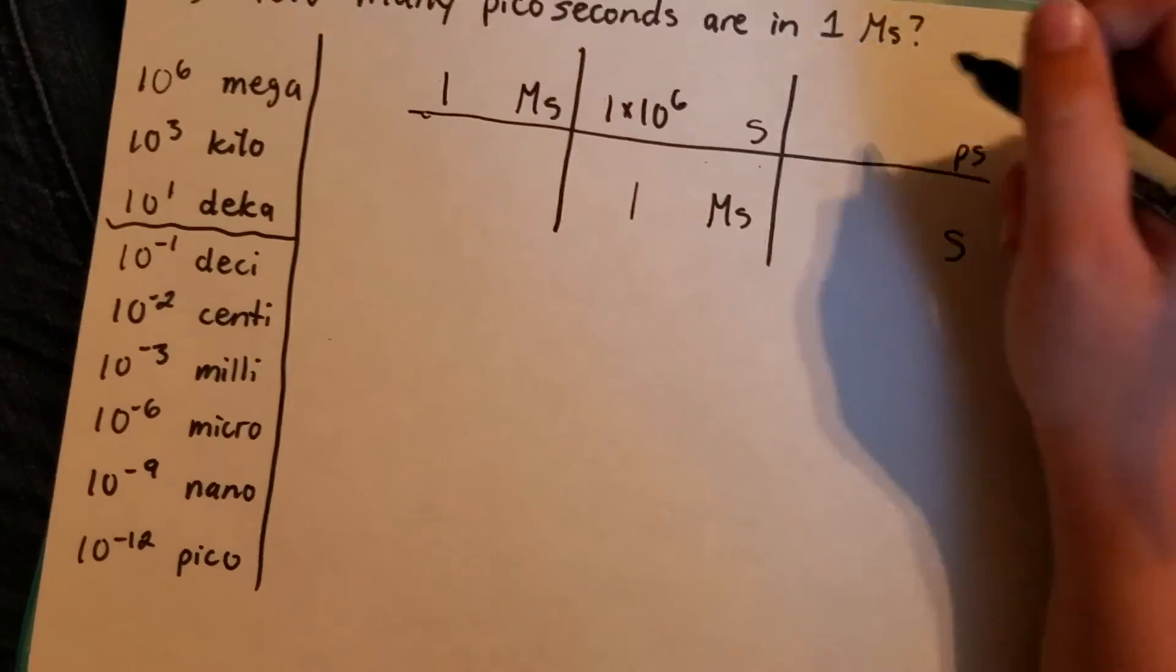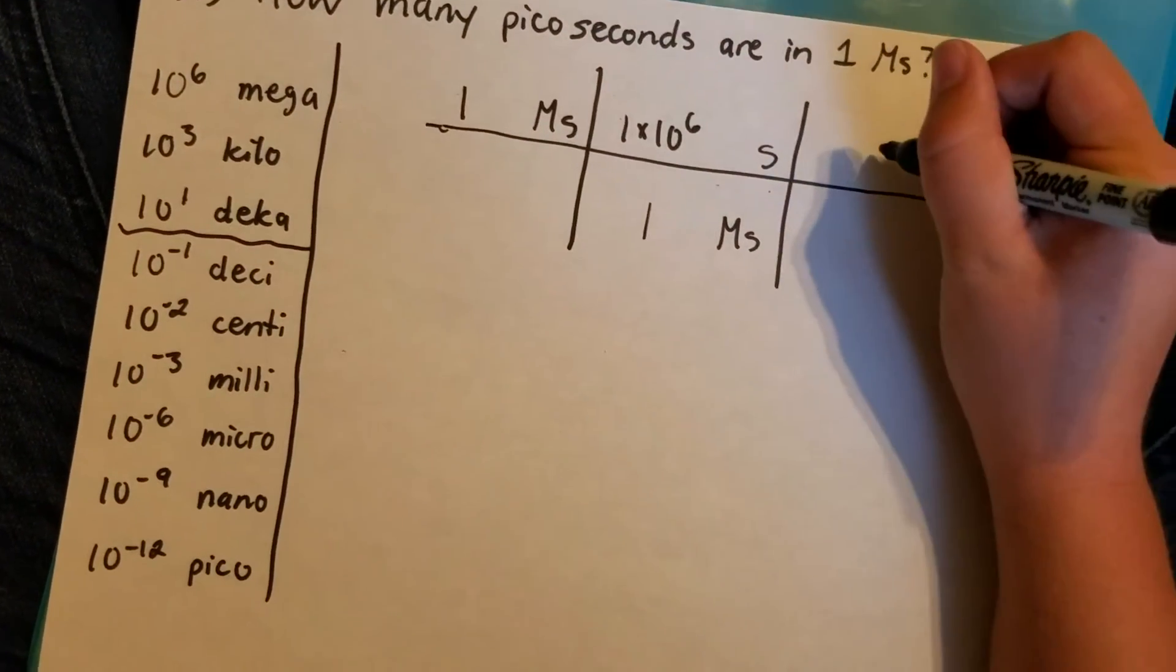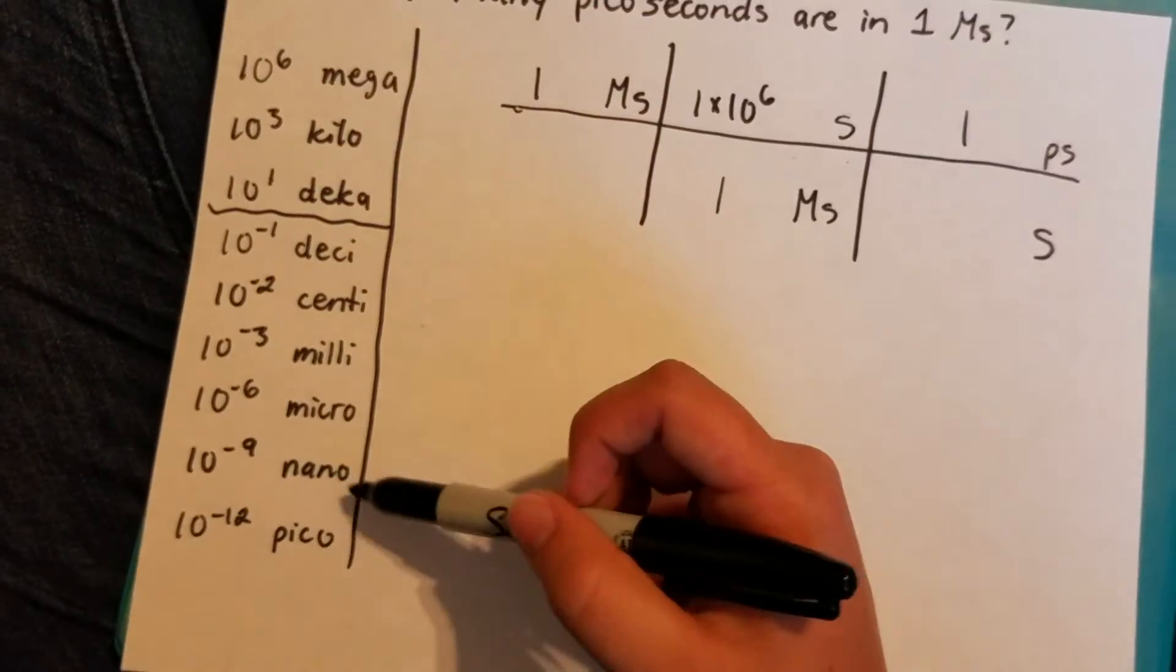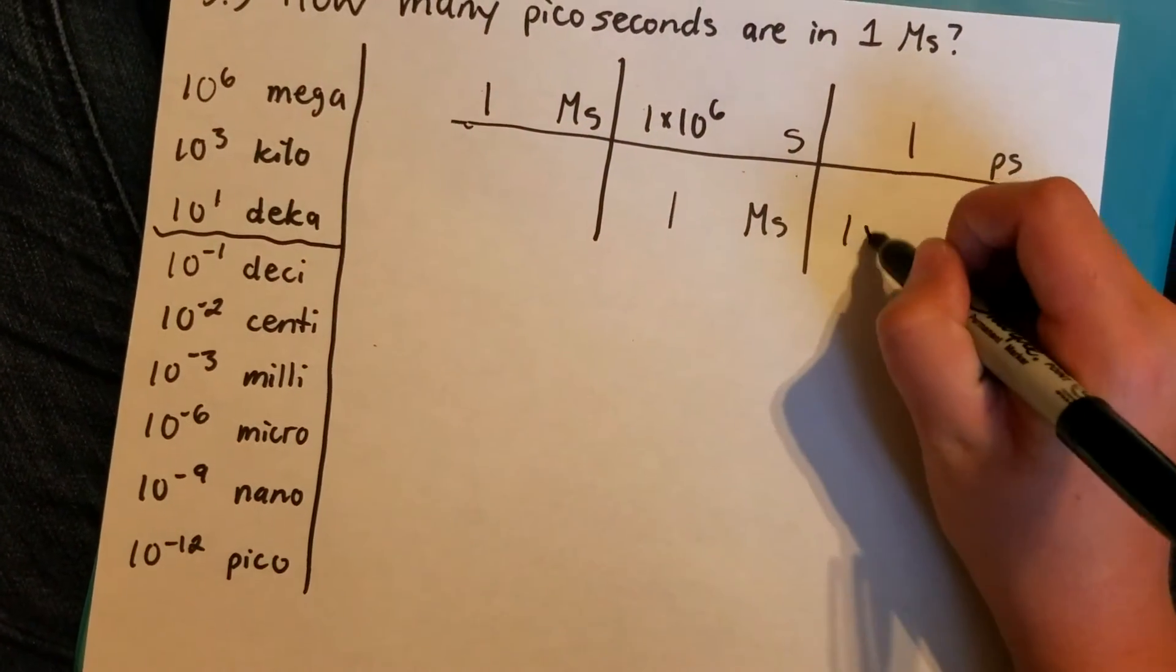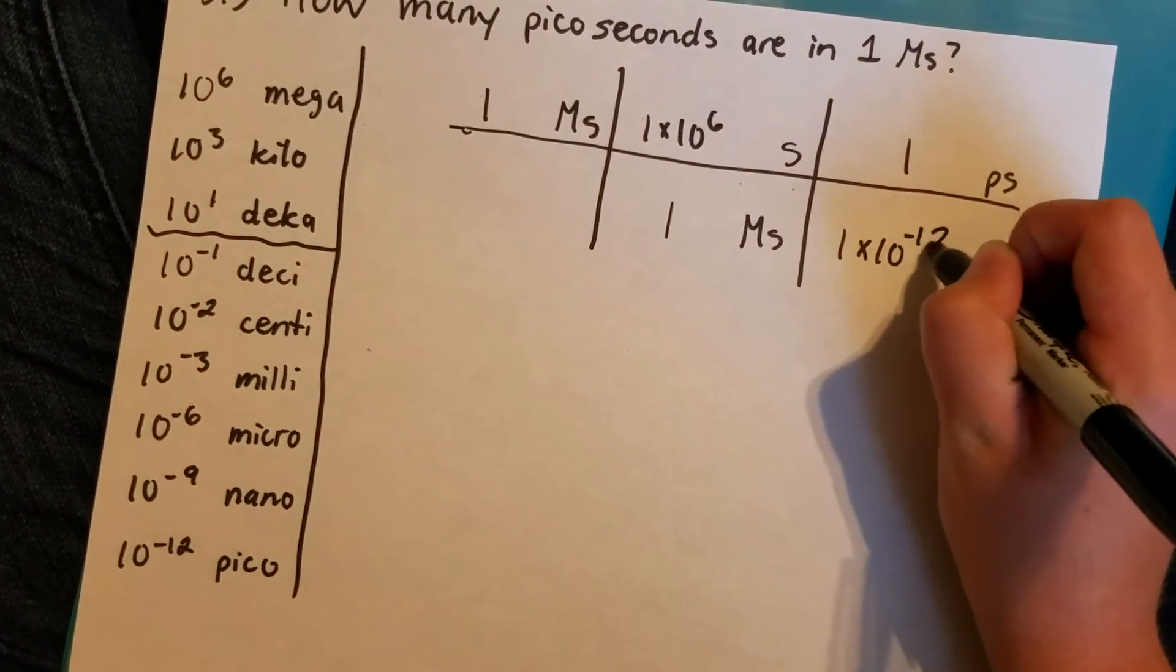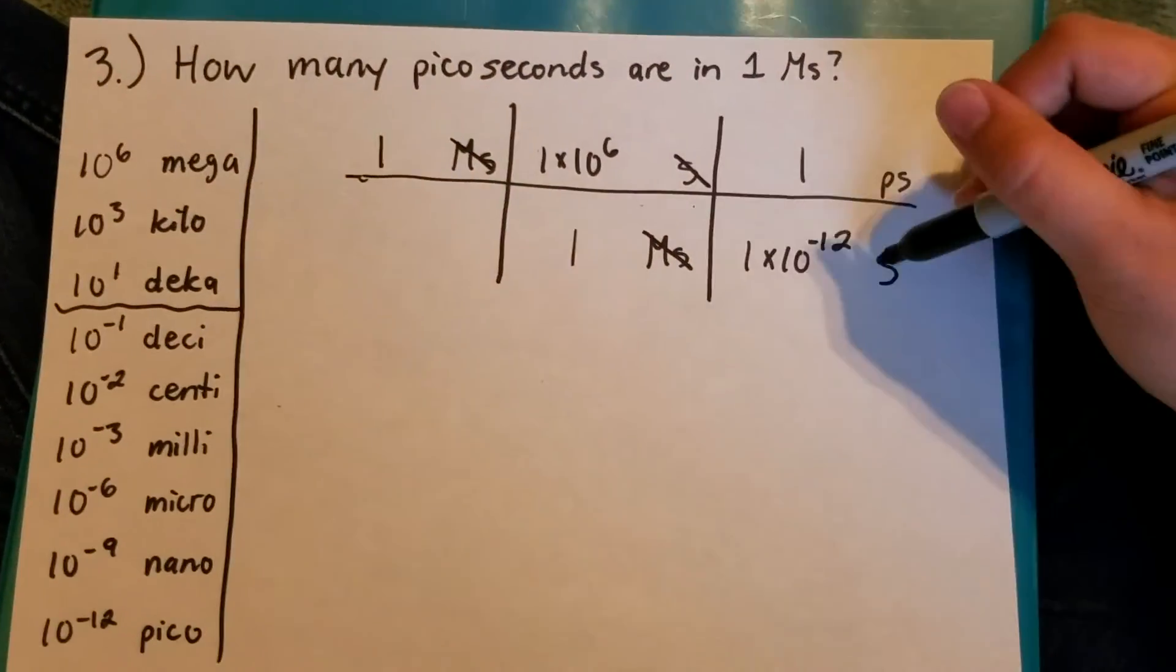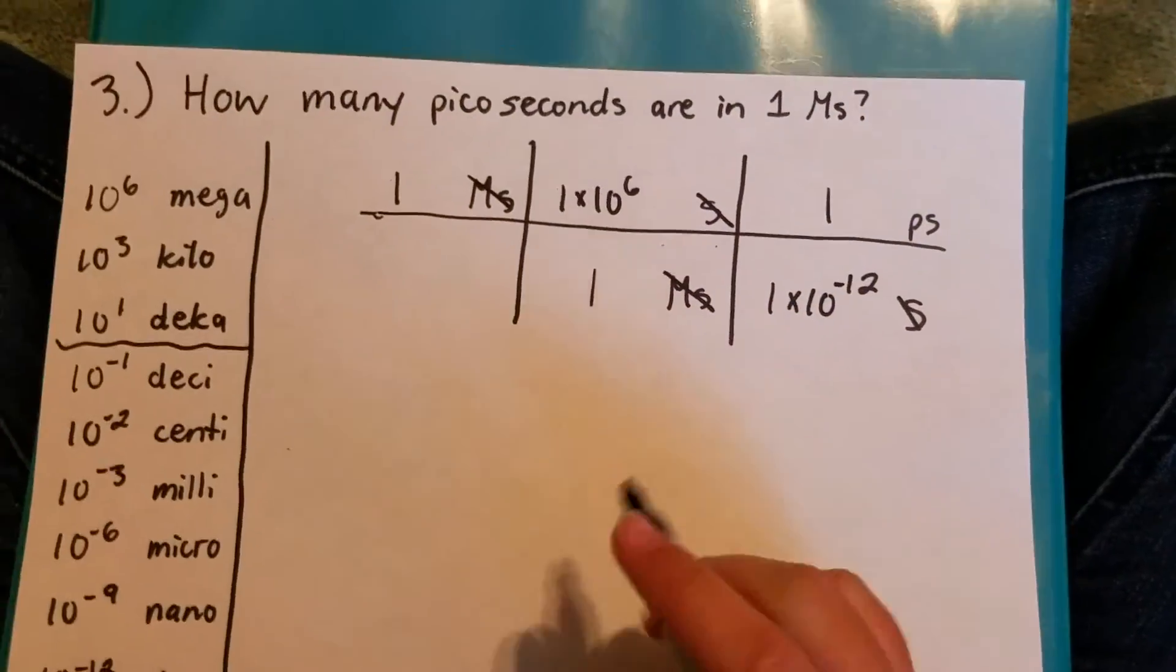Then you'll do the same thing for picoseconds. You want to know how many seconds are in 1 picosecond. So then you'll go from base to pico which is 1 times 10 to the negative 12. So my megaseconds cancel, my seconds cancel, and now I just multiply straight across.